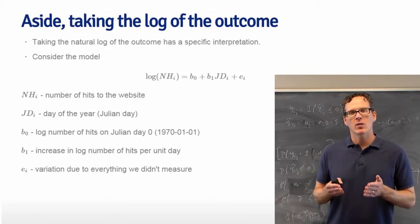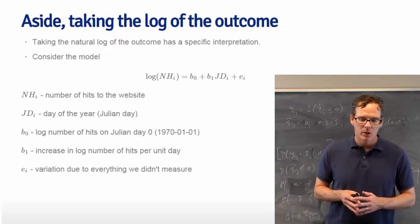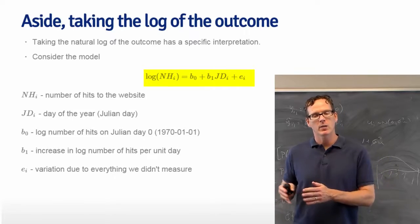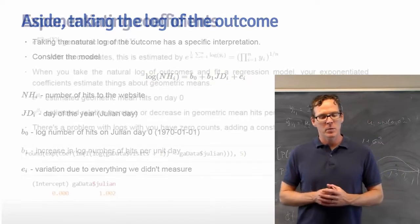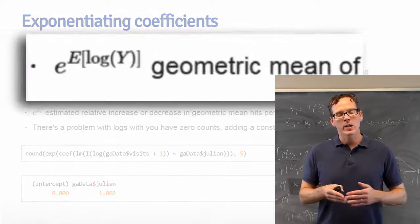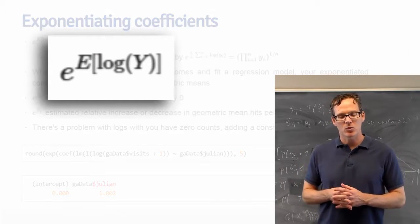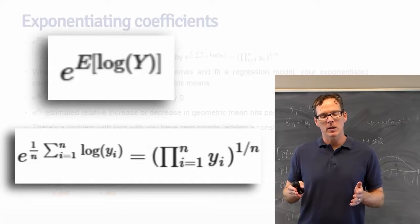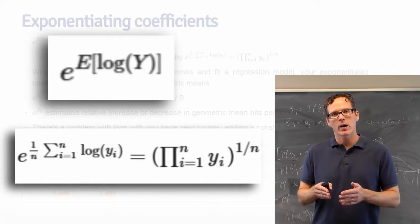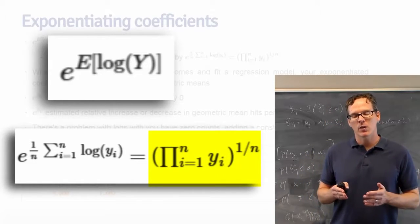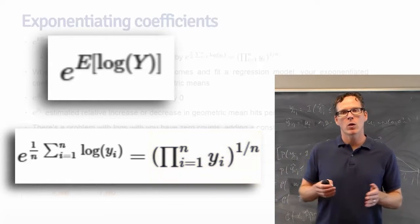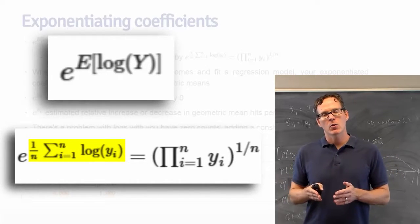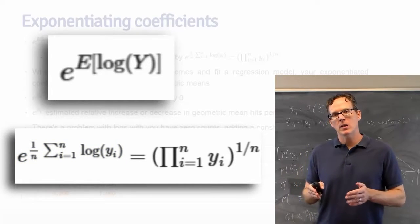The first thing we might try is taking the log of the outcome, here I mean the natural log. And this would be our model: log of NH is the linear regression model, beta_0 plus beta_1 times the Julian date plus the error term. Now let me speak a little bit about log and what it's accomplishing. The quantity e to the expected value of the log of a random variable is what I would call the population geometric mean. And the reason I would call it the population geometric mean is the empirical or just geometric mean is the product of a sample, product Y_i raised to the 1 over n power. So the geometric mean is just exponentiating the arithmetic mean of the log data.